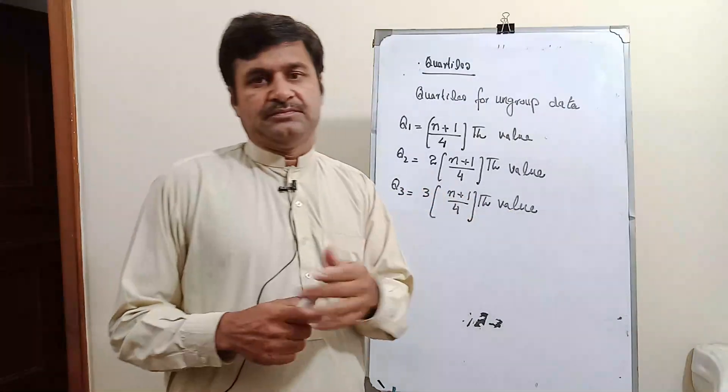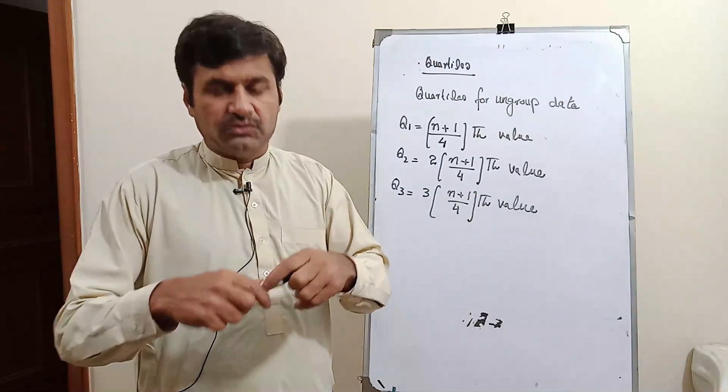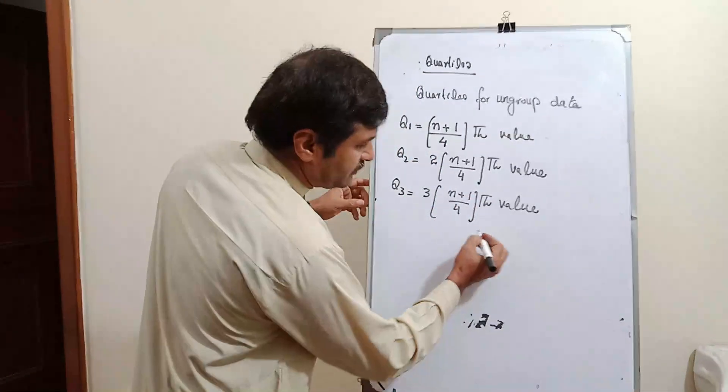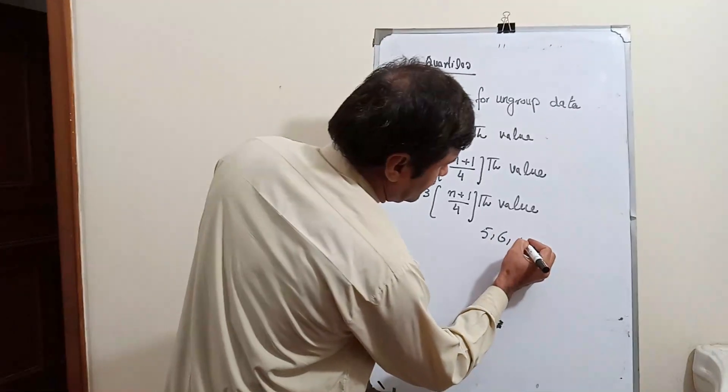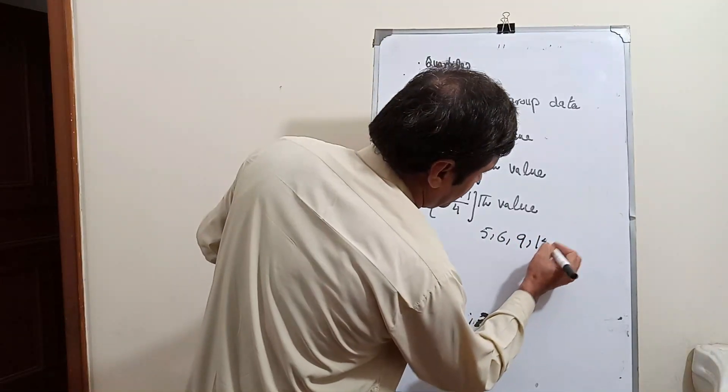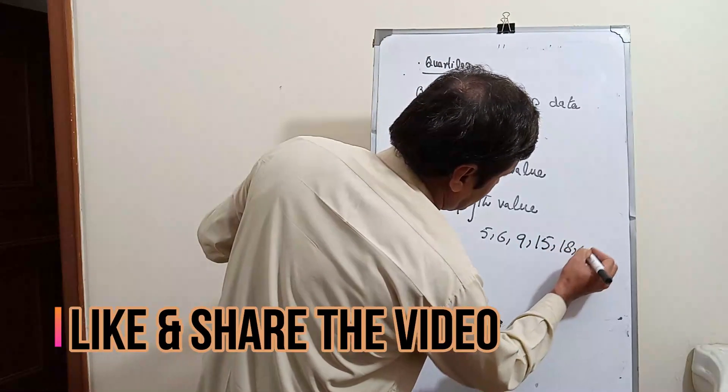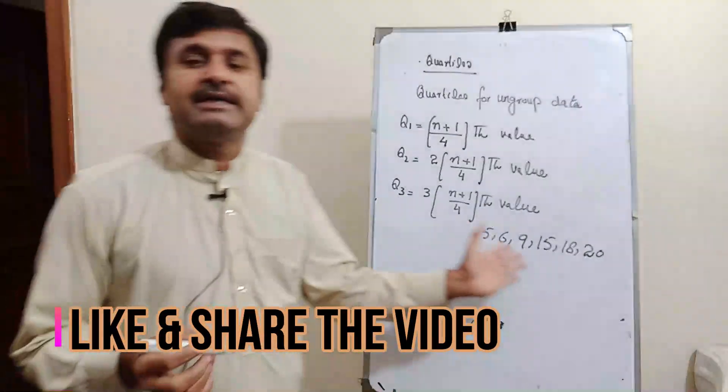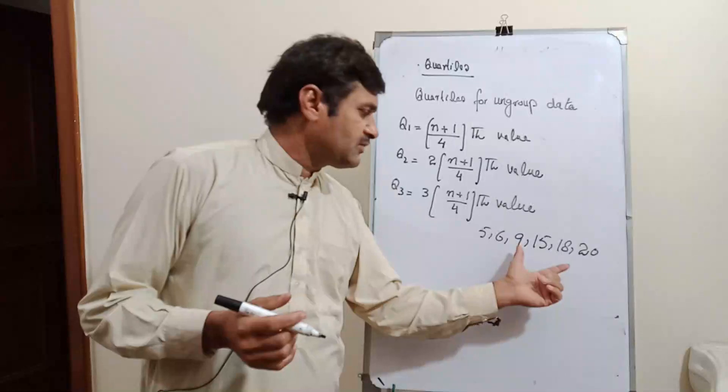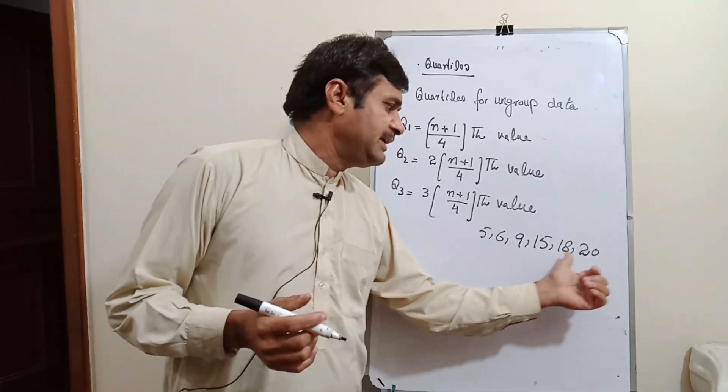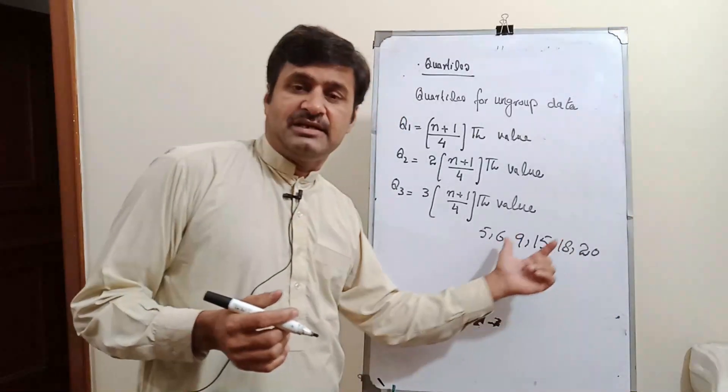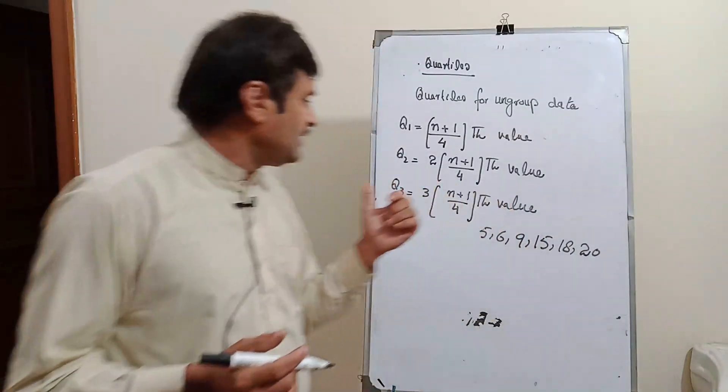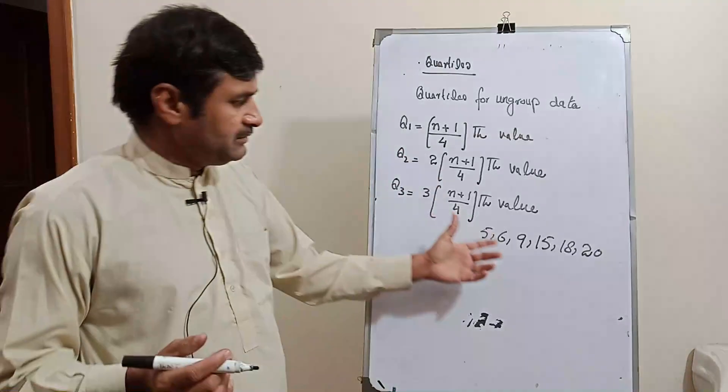Now we take an example. Suppose that we have the values 5, 6, 9, 15, 18, and 20. First of all, we should array the data. This is already in ascending order: 5, 6, 9, 15, 18, and 20. Now we find q3 by putting the values into the formula.